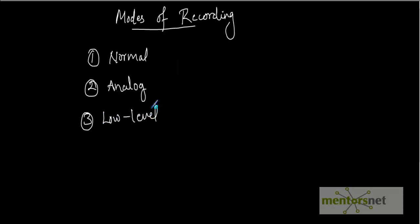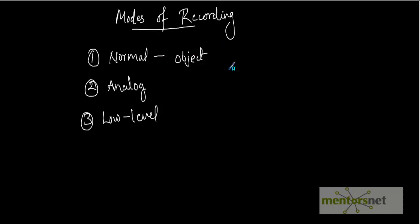These are the three types of recording modes supported by QTP. The first one is normal recording mode. In this mode, QTP records the objects in your application and the operations performed on them. QTP works on the objects and their descriptions. As we have seen in the last video, the recording done by default is normal recording mode, which works on objects and their properties.